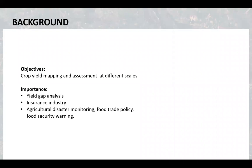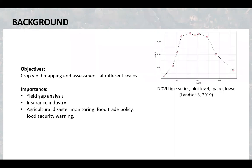Timely monitoring of agricultural production and early yield predictions are essential for food security. This information can be used for yield gap analysis, for agriculture disaster monitoring, or for food security warnings. With the availability of remote sensing time series at different scales, we can gather information from plot to regional level.